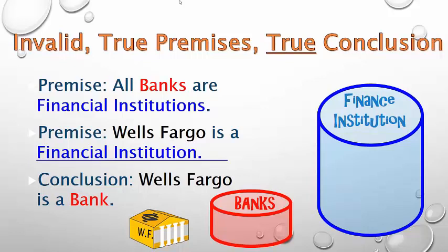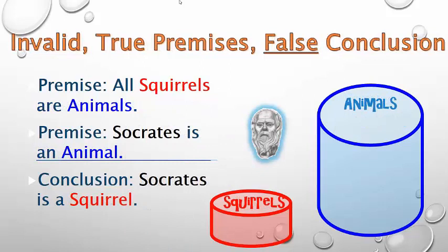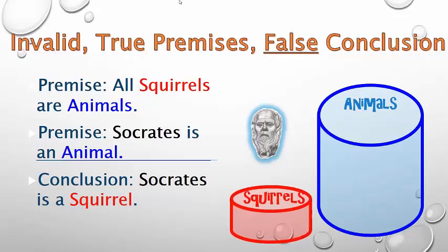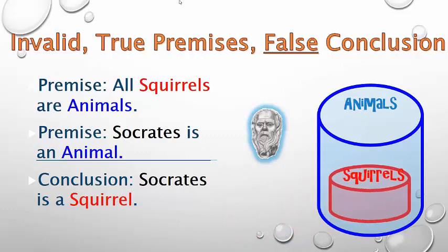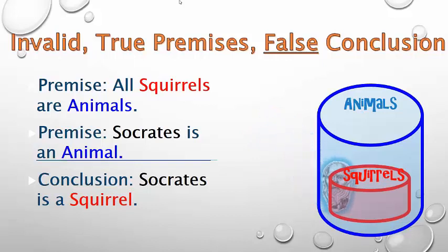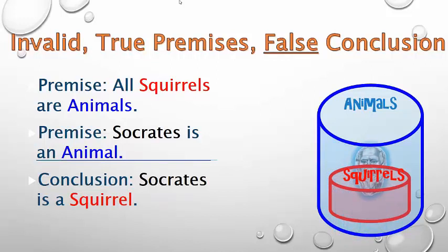Look at that argument once more — it's invalid and has true premises and a true conclusion. Notice what happens if I swap out the terms banks, financial institutions, and Wells Fargo for squirrels, animals, and Socrates. Same type of argument, just with swapped terms. If all squirrels are animals, and Socrates is an animal, does it follow that Socrates is a squirrel? This illustrates the point that these sorts of arguments are invalid precisely because they're unreliable.